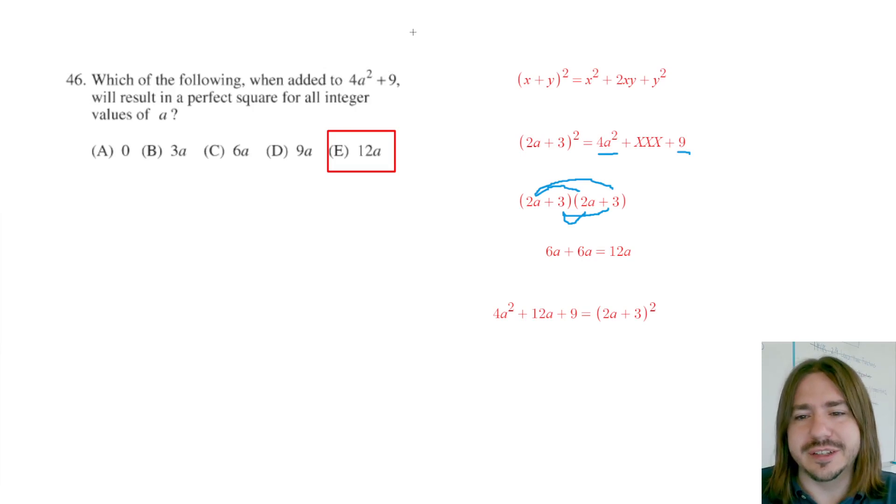But basically what I'm doing is I'm taking the square root of each of these two terms and then multiplying them together and then doubling it. Again, that's basically what I did to find that. But here I think you just really have to think your way through the problem. So that's it for number 46. I hope you guys enjoyed the video and have a great day.